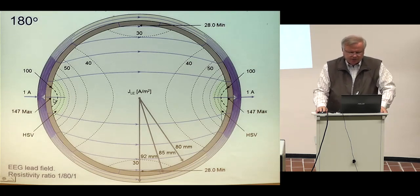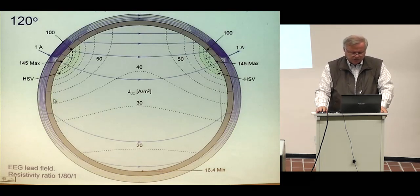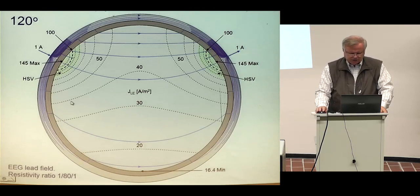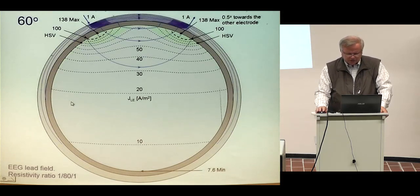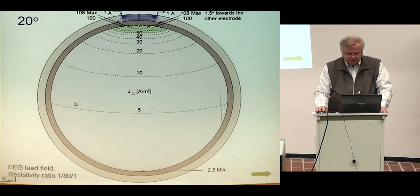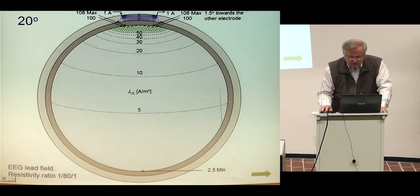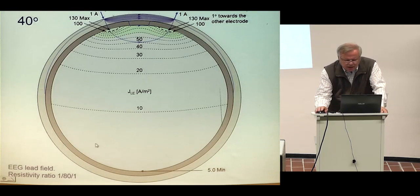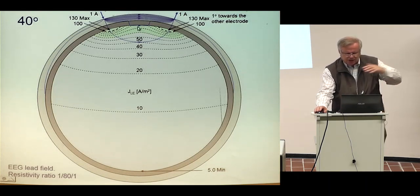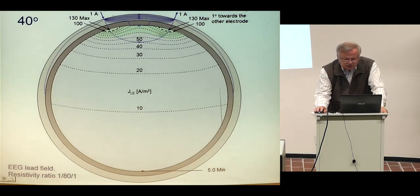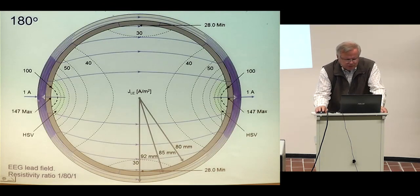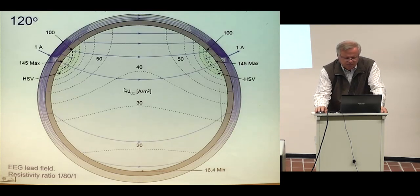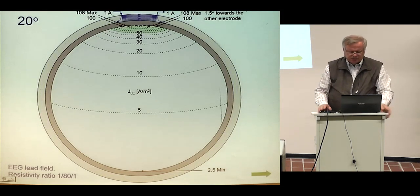As Rush and Driscoll did, we similarly changed the location of the electrodes — 120 degrees distance, 60 degrees, 40 degrees, and finally 20 degrees distance. You see that the lead field current is flowing tangentially to the head, and the measurement sensitivity is concentrated under the electrodes. When the electrodes are far apart, the measurement sensitivity is mostly radial. When they are close to each other, the measurement sensitivity is tangential.